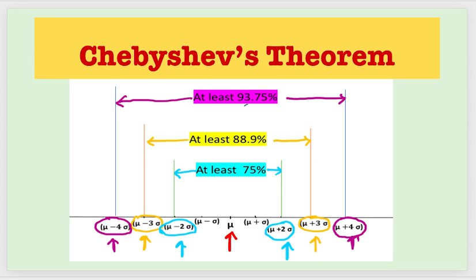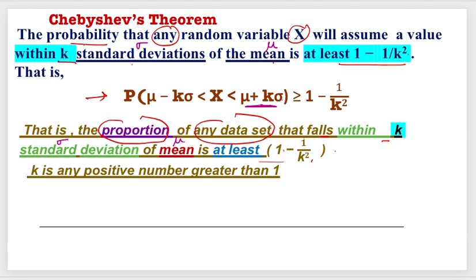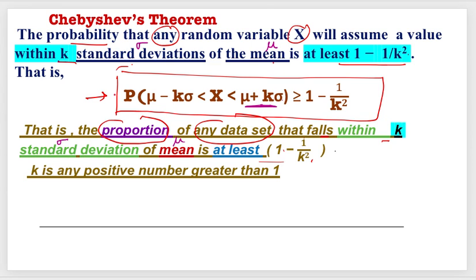In this video, I am going to share about a theorem called Chebyshev's theorem. The statement of the theorem says that the probability that any random variable X will assume a value within k standard deviations of its mean is at least 1 minus 1 upon k squared. We can also state it as the proportion of any data set that falls within k standard deviations of the mean is at least 1 minus 1 upon k squared. This is also called Chebyshev's inequality.